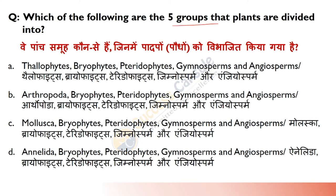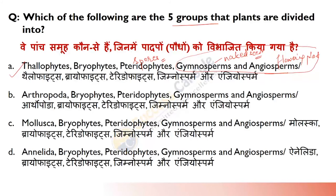Plants are divided into how many groups? Answer is five. The five groups are: Thallophytes (algae and fungi), Bryophyta (called amphibians of the plant kingdom), Pteridophytes (reproduce using spores), Gymnosperms (naked seeds, flowerless plants), and Angiosperms (flowering plants).